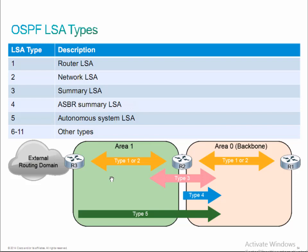Then we have type 4 LSAs. Those are also only generated by area border routers — nobody else in an autonomous system will generate a type 4 LSA. But type 4 LSAs will never exist unless you have type 5 LSAs — they're actually paired together. It's called an ASBR summary LSA. Let me table the discussion of type 4 and go into type 5 first, then come back to type 4.